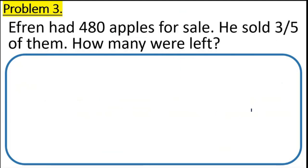Let's continue. Let's have problem number 3. Efren had 480 apples for sale. He sold 3 fifth of them. How many were left? We're going to now multiply the 480 apples of Efren. So, 480 apples over 1 times 3 fifth.